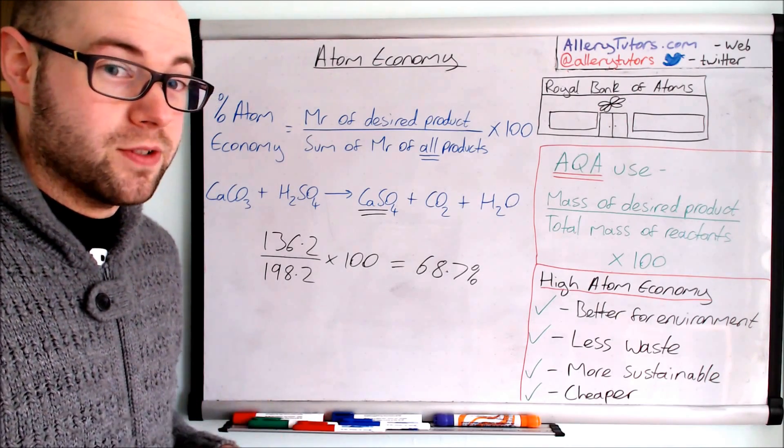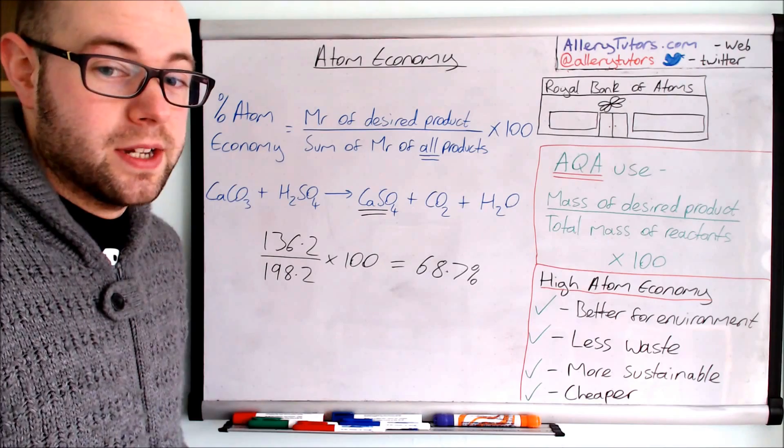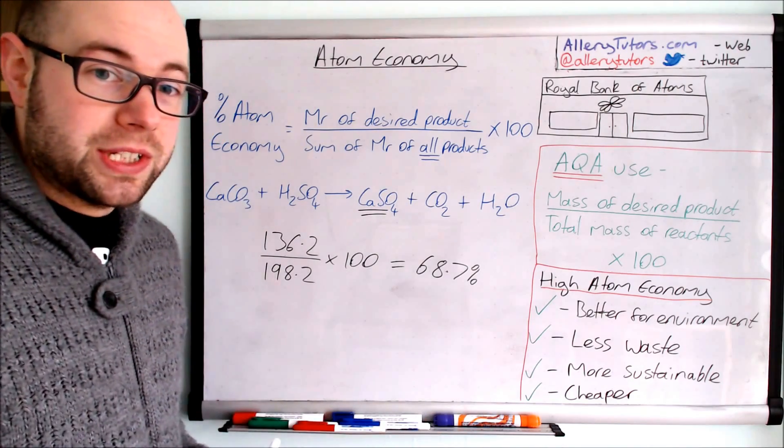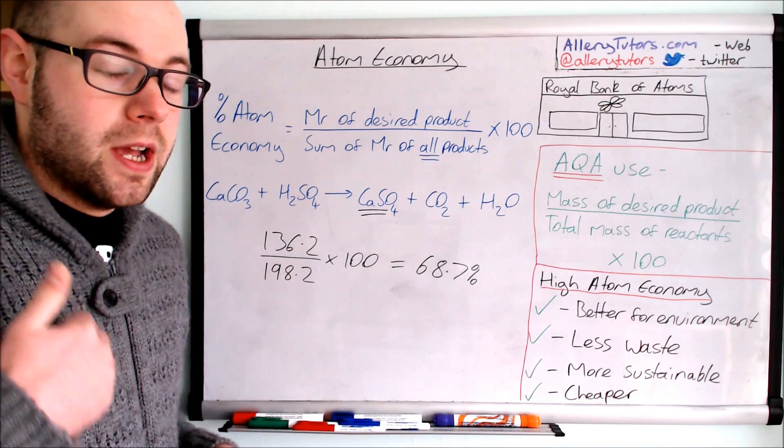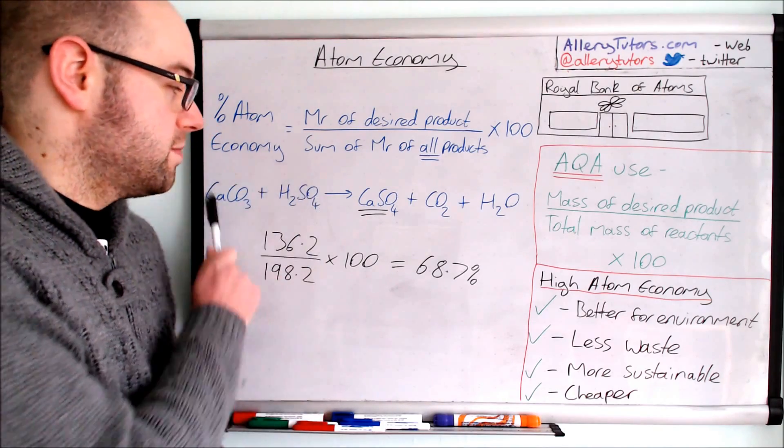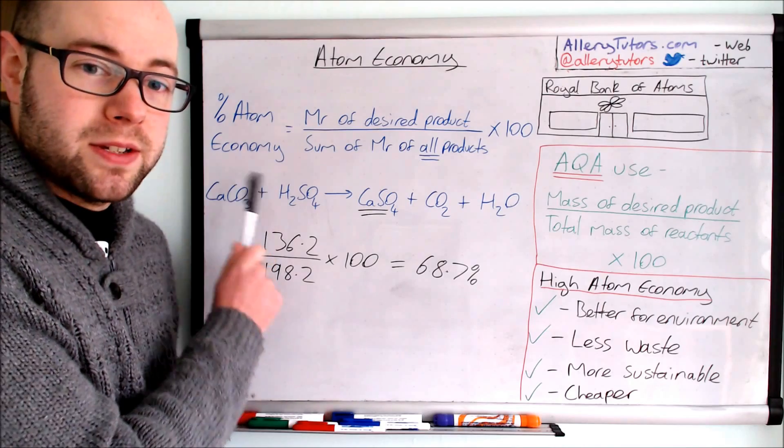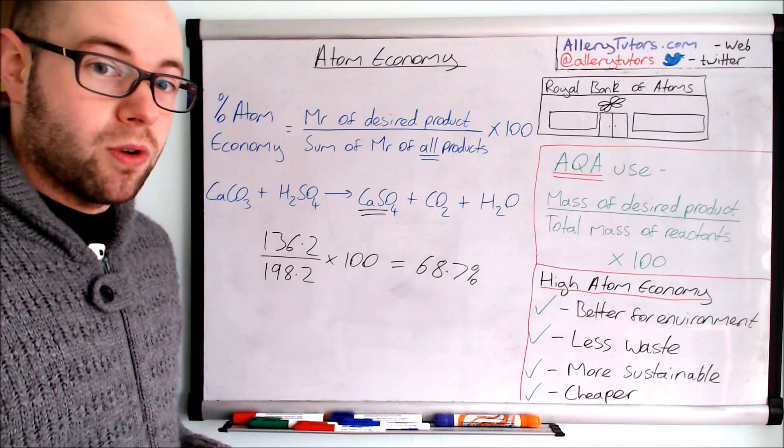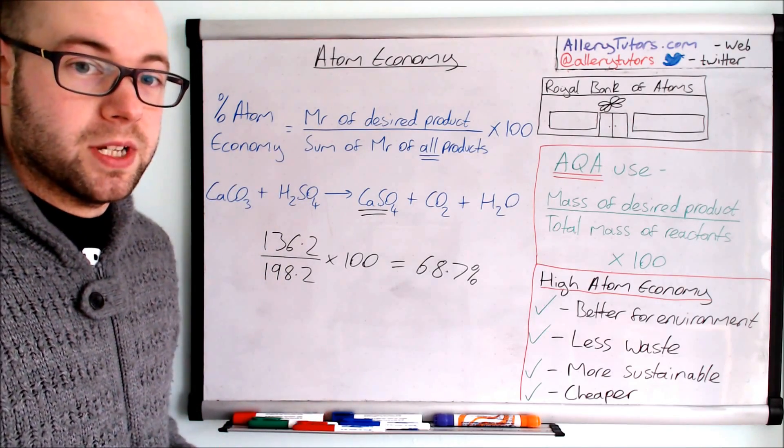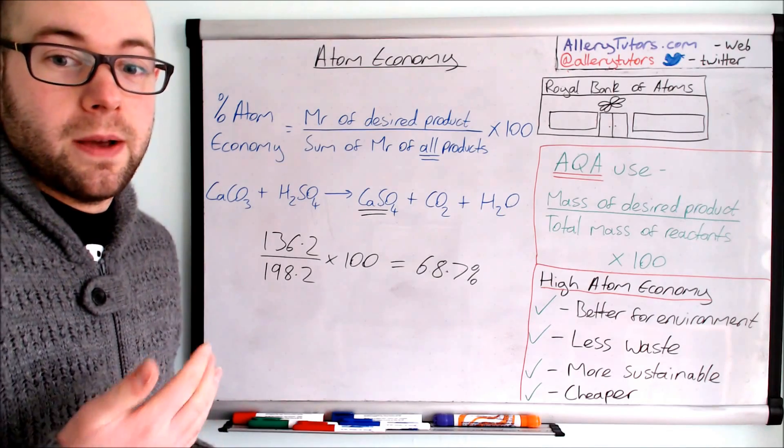Some chemicals are pretty dangerous they have to be treated beforehand. It's also a more sustainable way of actually producing products because if more of your atoms from your raw materials are going into making the product you don't have as much waste so you don't need to use as much raw materials.